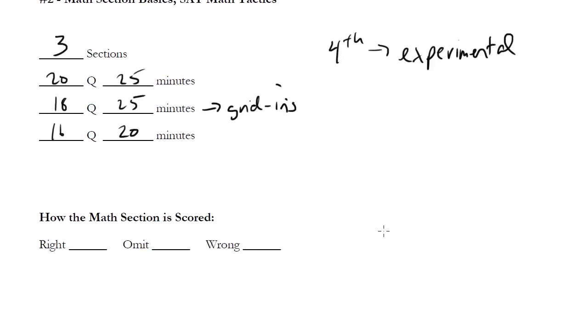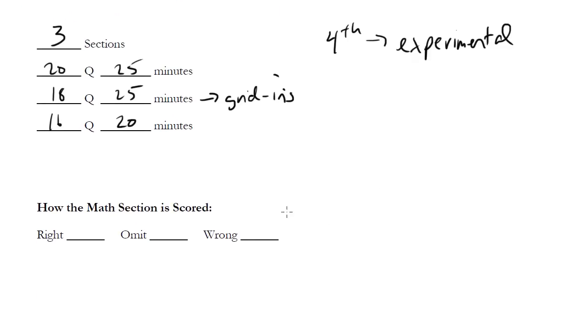Now how is the math section scored? You get plus one if you get a question right, you get plus one raw point. You get no credit if you omit. And here's the big difference: you get minus one quarter point if you put down an answer and get it wrong. So not only do you not get credit for the question, you actually lose points that you had earned elsewhere.